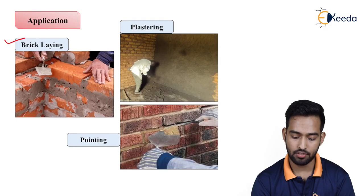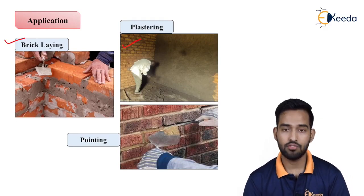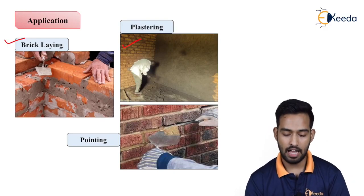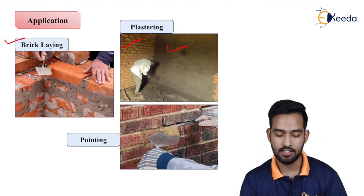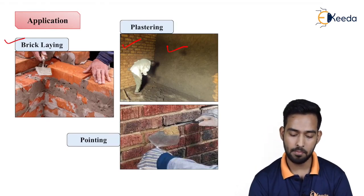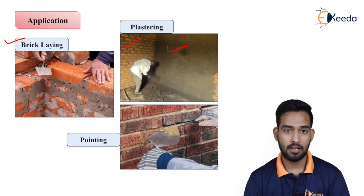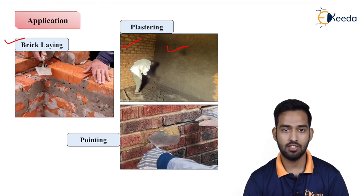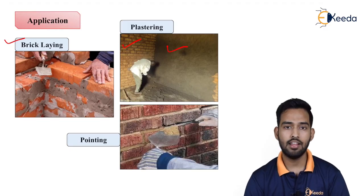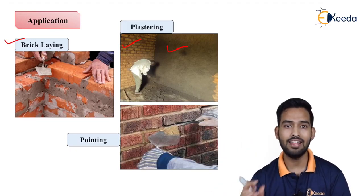Then, mortar is used in plastering work. As you can see, this is the unfinished surface of a brick wall. After applying mortar over it and leveling it, we get a smooth finished surface — that is known as plastering. We are preparing the wall for plastering purposes. In plastering, we throw the mortar over your brick or stone surfaces, and then by using floats, we bring it to a proper shape and thickness.